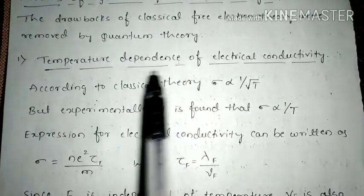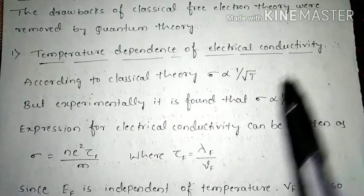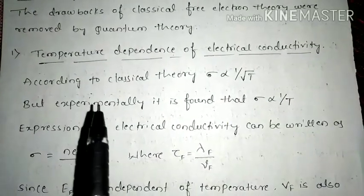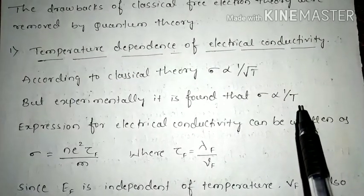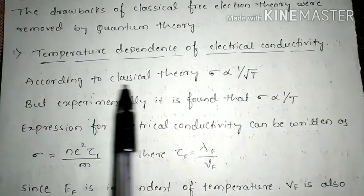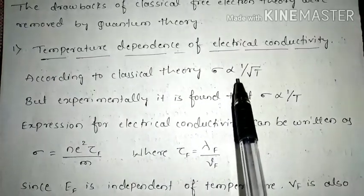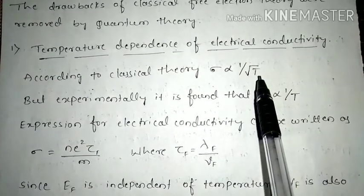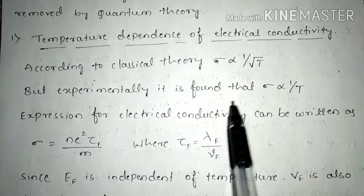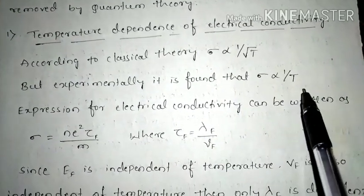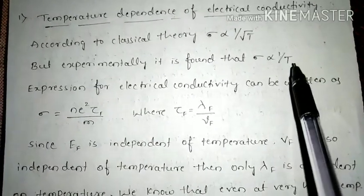The first merit is the temperature dependence of electrical conductivity. We know that σ is inversely proportional to temperature. But according to classical free electron theory, σ is proportional to 1/√T, which is not correct, because experimentally σ is found to be inversely proportional to T. Quantum theory explains this correctly.